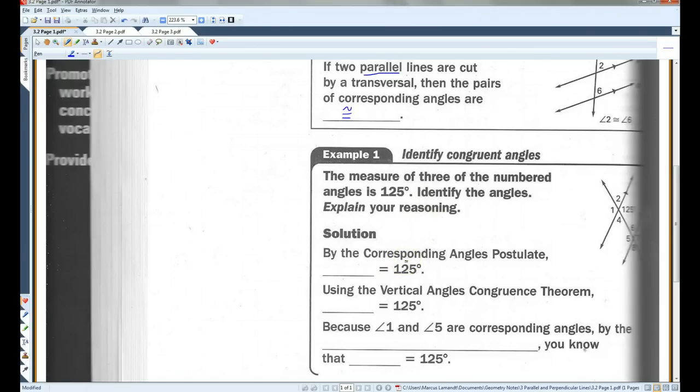Okay, by the corresponding angles postulate, because this angle is 125 and these two lines are parallel, angle 7 also has to be 125 degrees, because those are corresponding angles.